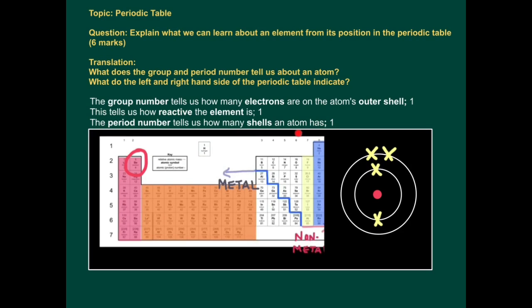The period number tells us how many shells an atom has. So beryllium is in period two, so it has two shells.